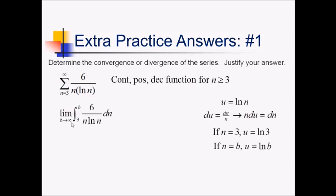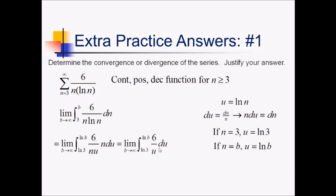Plugging all that back in, we have limit as b approaches infinity, with limits of integration from ln(3) to ln(b). Then we're going to have n times u in the denominator and 6 times n·du in the numerator. So now I can cancel out these n's, leaving me with just 6 over u. When I take the antiderivative of this, this is just going to be 6 times the ln of the absolute value of u, evaluated from ln(3) to ln(b), with the limit still hanging around.